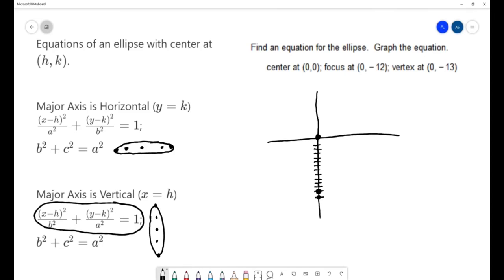I'm going to use (x - h)² over b² plus (y - k)² over a² equals 1. Now we need to fill in these pieces h, k, b, and a in order to write the equation in detail. The center is our (h, k) and we were given a center of (0, 0), so we know that h is 0 and k is 0.